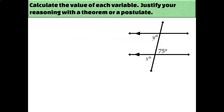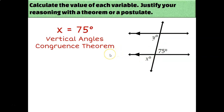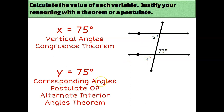Let's kick it up a notch and solve for more than one missing angle measure. x and 75 are vertical angles, so they must be equal by the vertical angles congruence theorem — x is 75. And y and 75 are alternate interior angles, so they must be congruent by the alternate interior angles theorem. Or you could say x is 75 and x and y are corresponding angles, so they must be congruent. Either way, y is 75 degrees, though your reason may vary depending on how you look at the diagram.